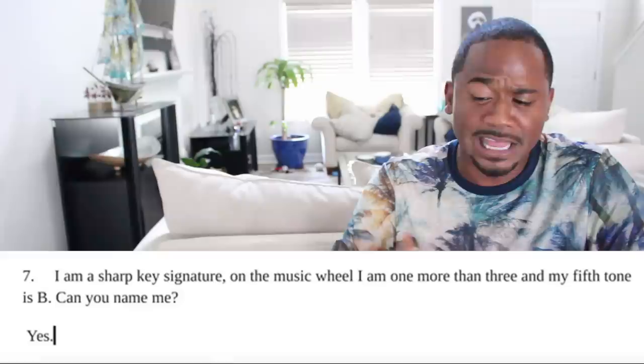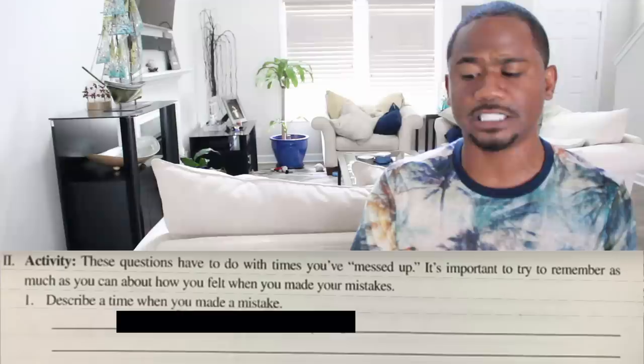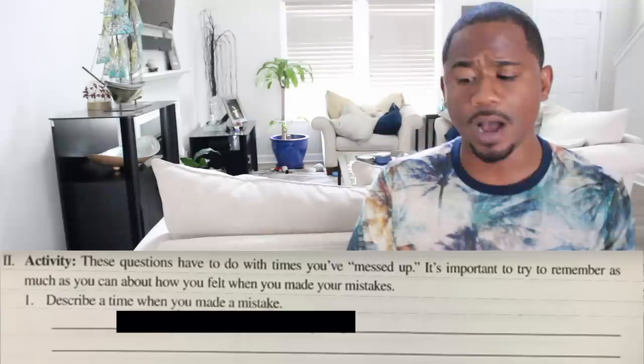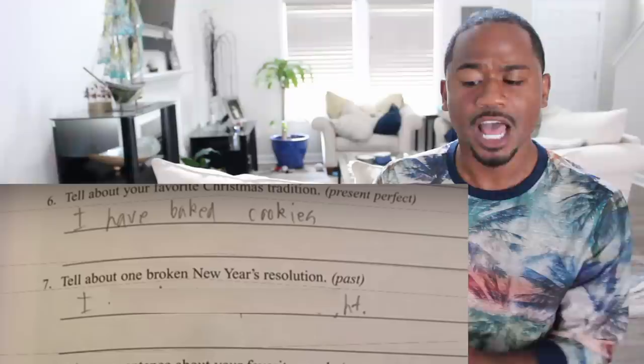These questions have to do with times you've messed up. It's important to try to remember as much as you can about how you felt when you made your mistakes. Number one — describe a time when you made a mistake. This kid wrote: 'I downloaded Fortnite.' Question six — tell about your favorite Christmas tradition, present perfect: 'I have baked cookies.' Question seven — tell about one broken New Year's resolution, past: 'I failed to lose weight.'